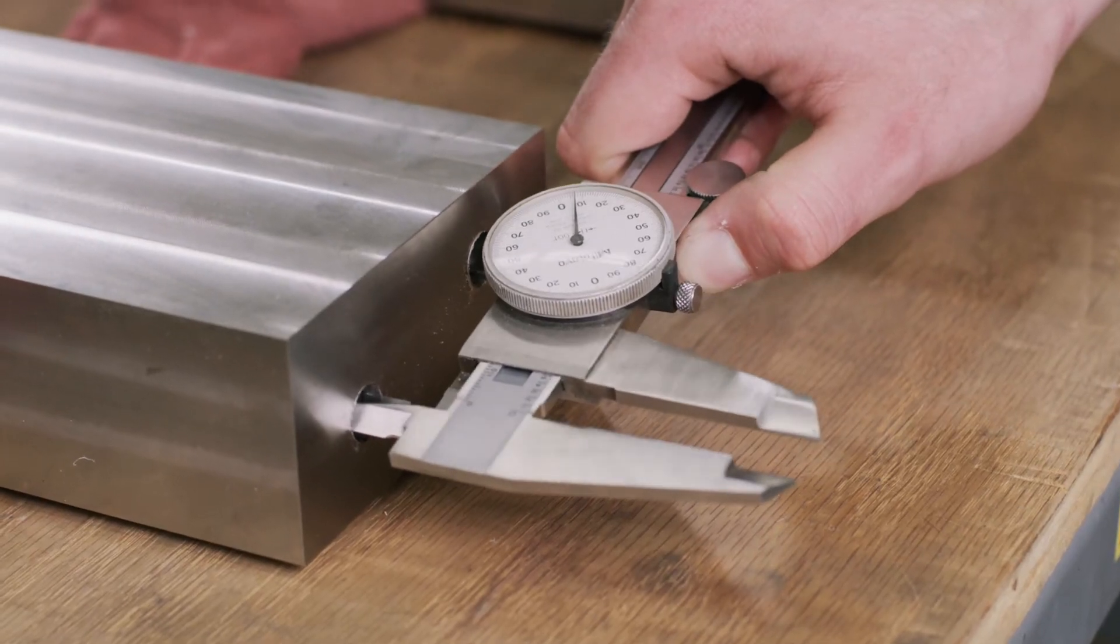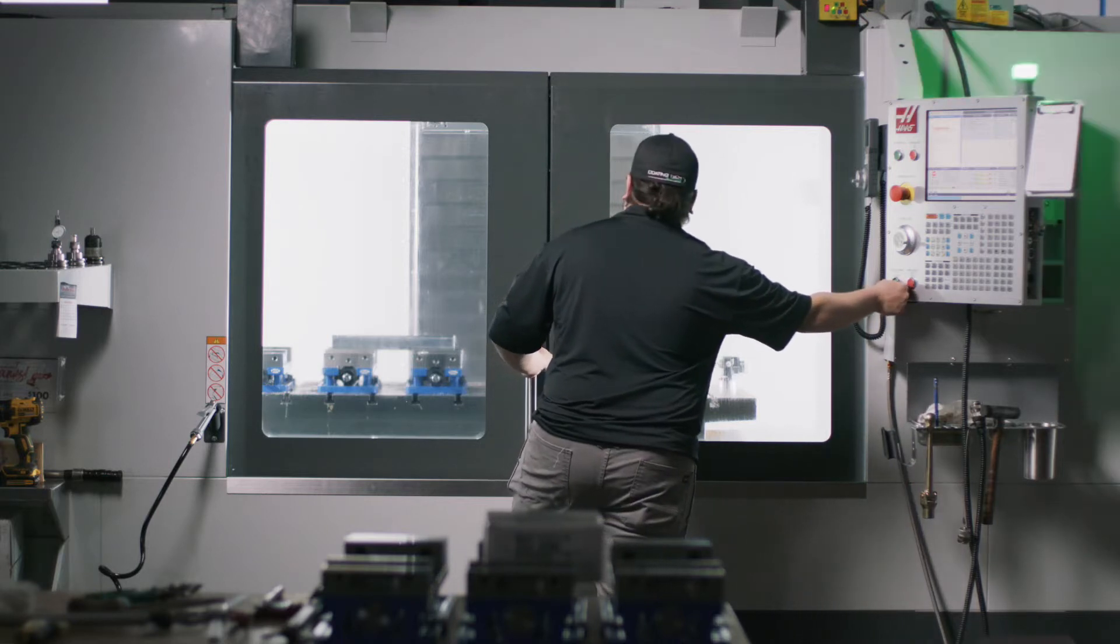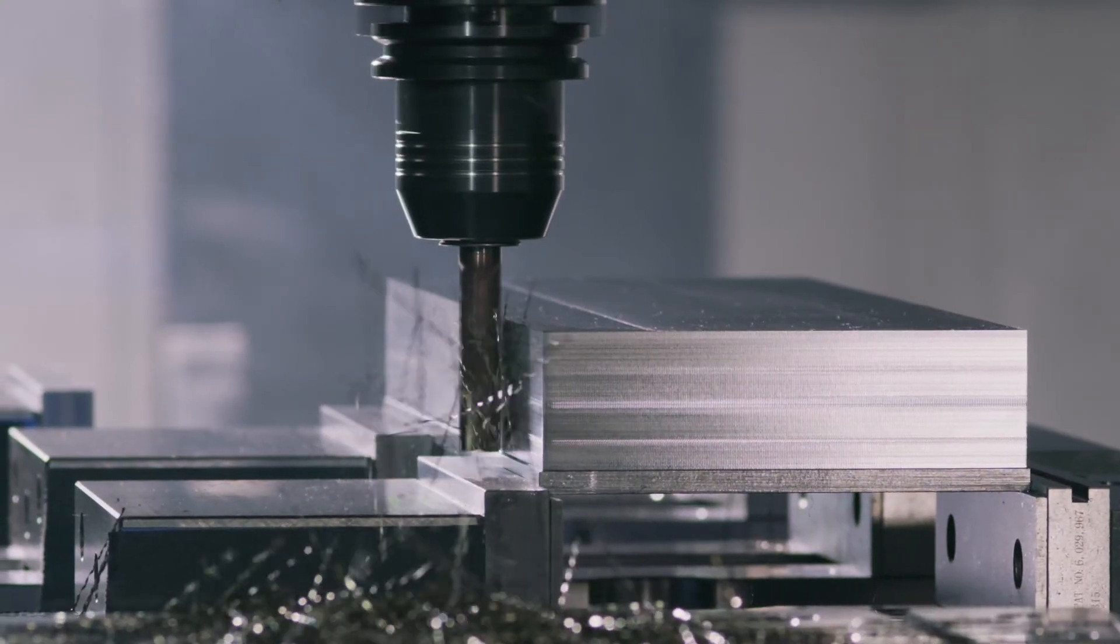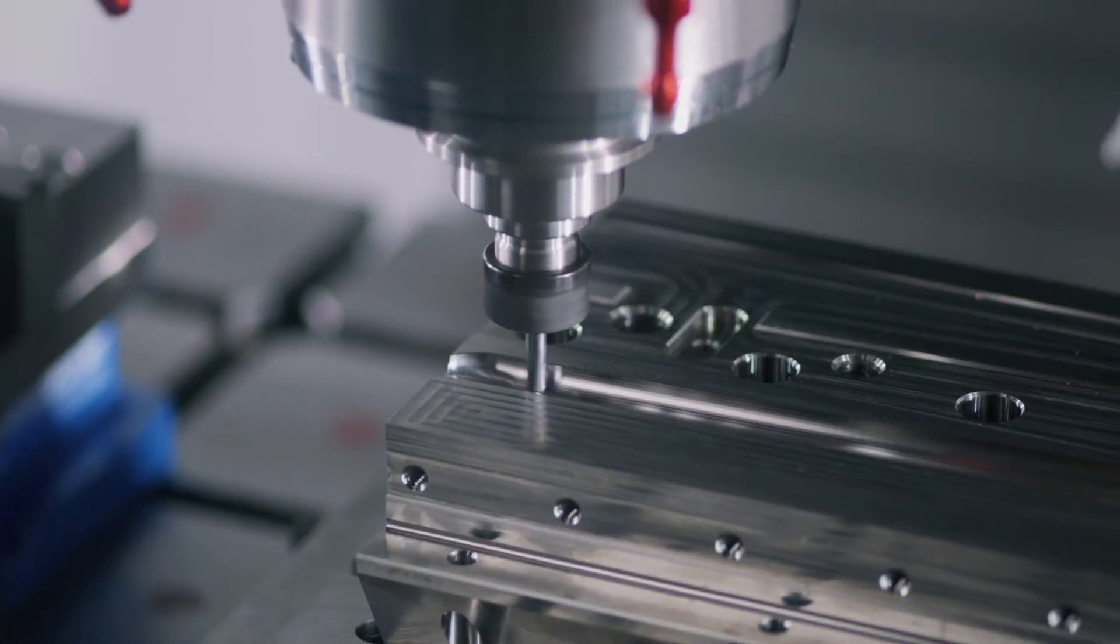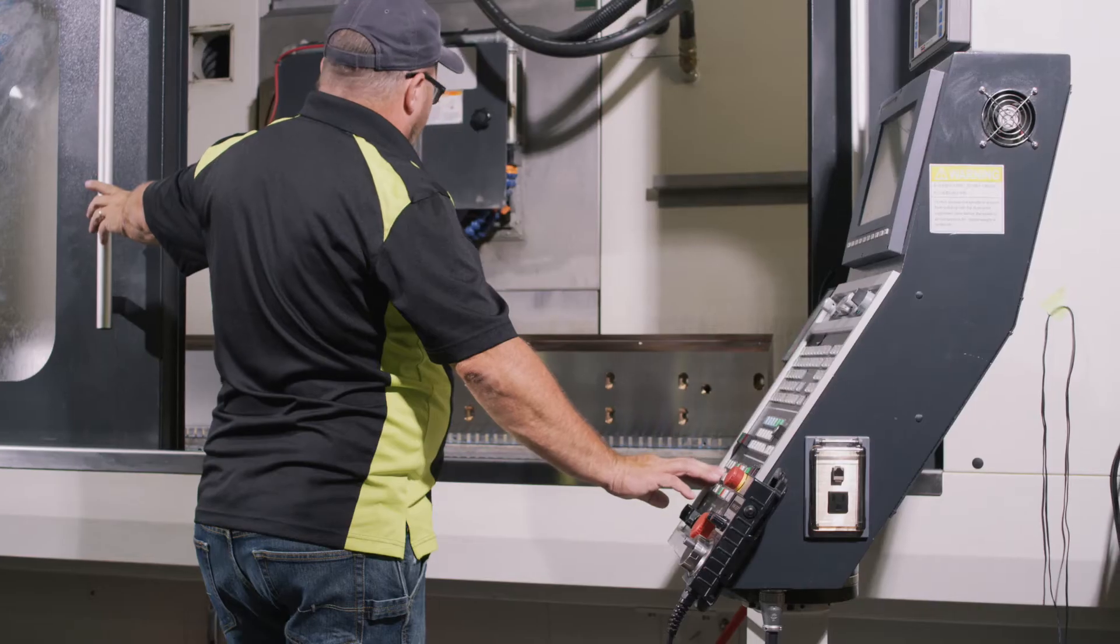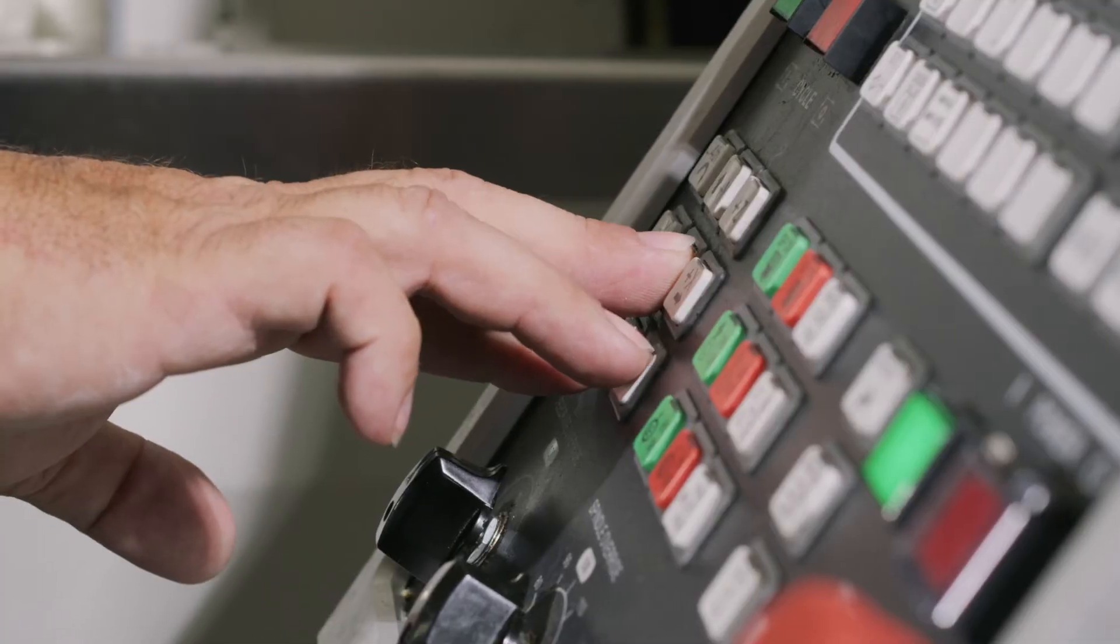We order in raw stock material and we'll machine that down to the specifications that are engineered. So we'll mill surfaces down to size, we'll put holes in, taps in, then we'll do all the precision type processes from there.